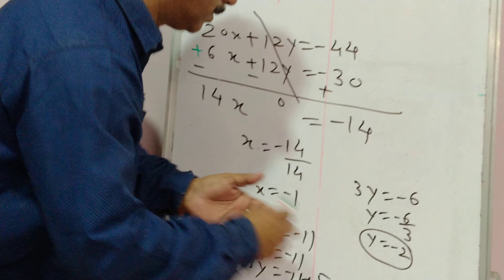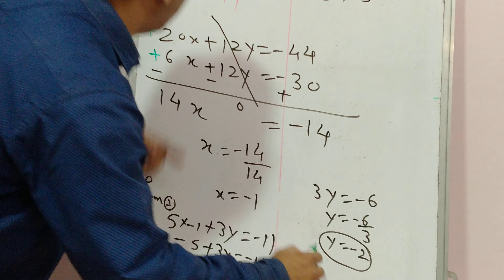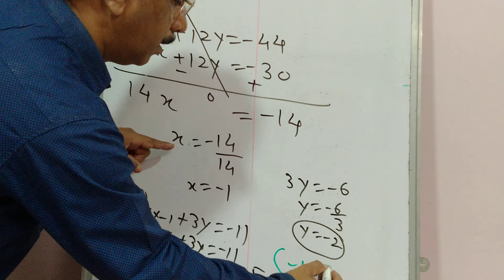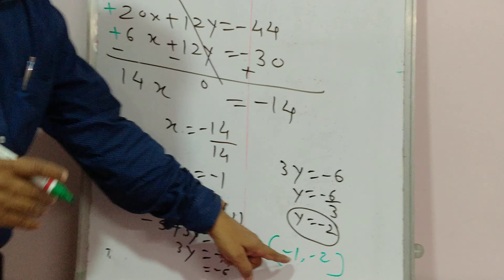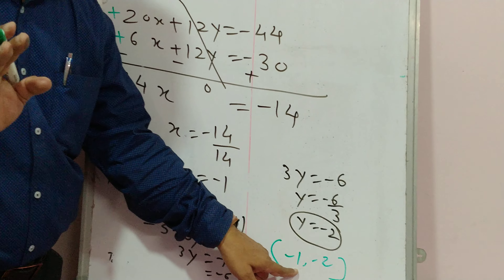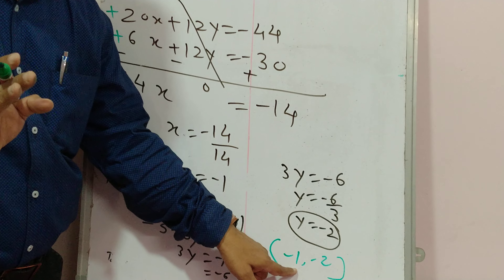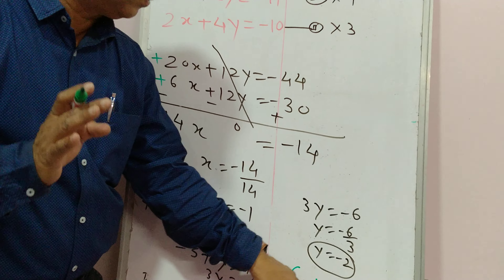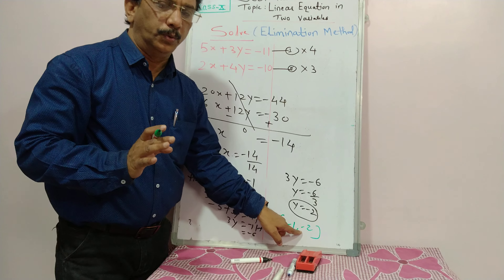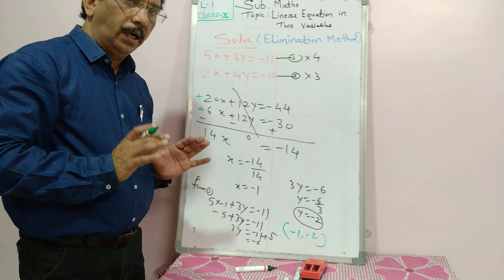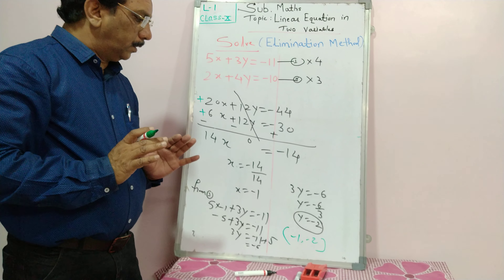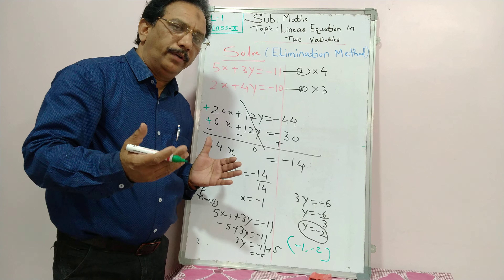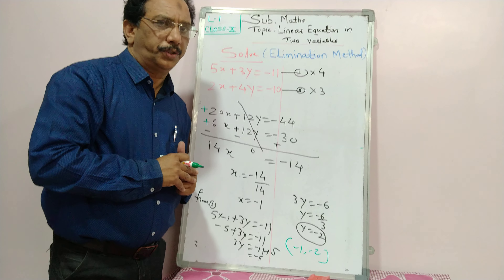So you get two answers: x equals minus 1 and y equals minus 2. Therefore, the solution of the given equations is (minus 1, minus 2). Note it down and apply this elimination method to solve different types of questions.